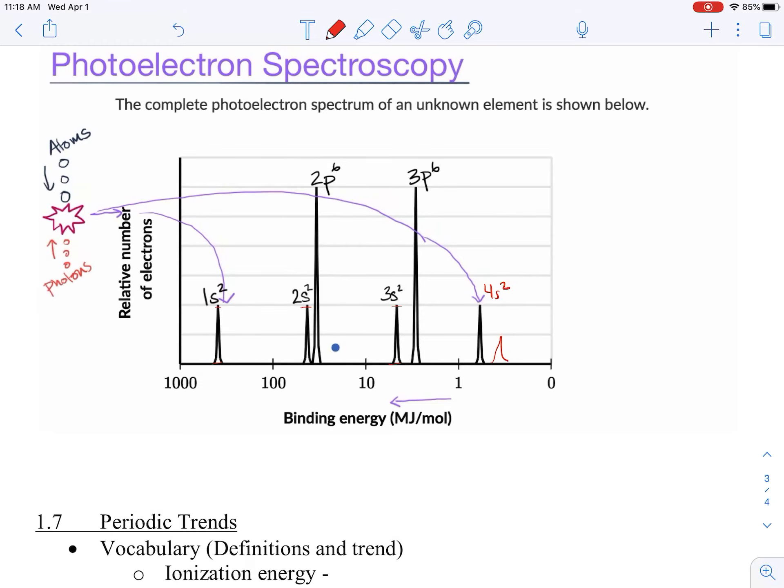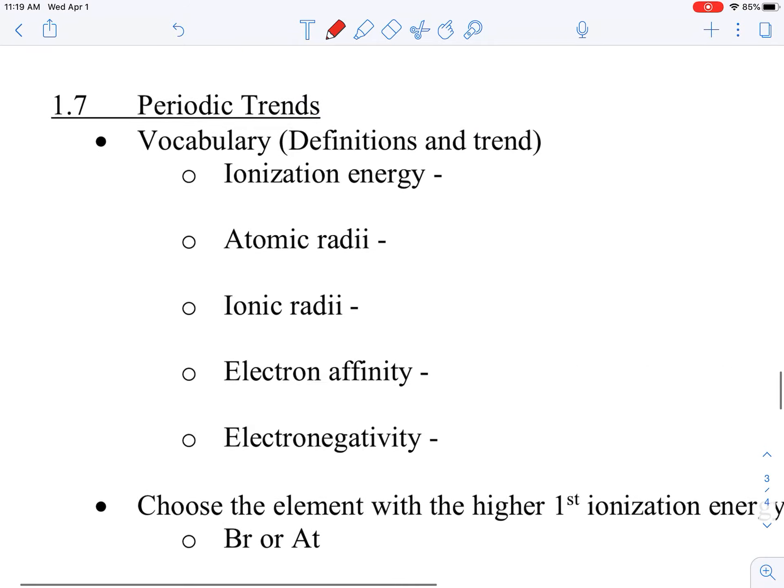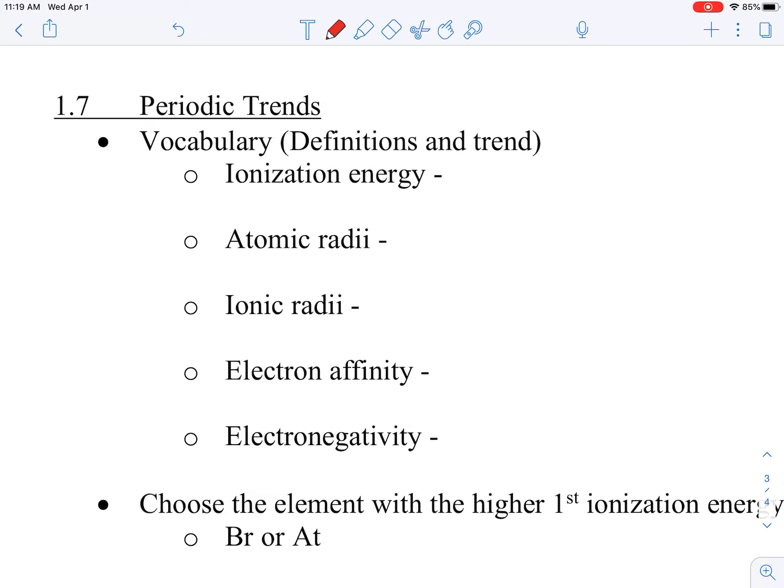Rolling on, periodic trends. We spent a lot of time on this one in the fall, so hopefully we remember it, but quickly we'll go through our definitions and words. We have ionization energy. This is the amount of energy to remove an electron. We're talking about removing one electron. Most of the time we're talking about the first ionization energy, but sometimes we talk about the second, third, and so on. Atomic radii, this is from the nucleus to the last cloud, the size of it. Then we have the ionic radii, so this is the size after it's either lost or gained.